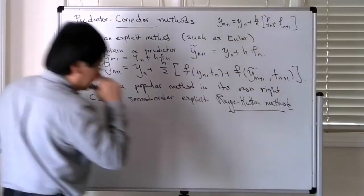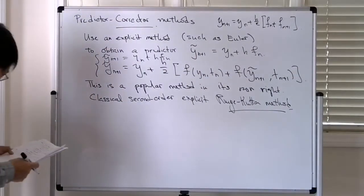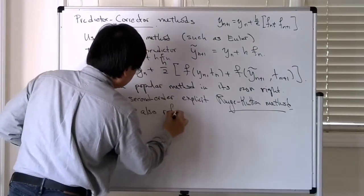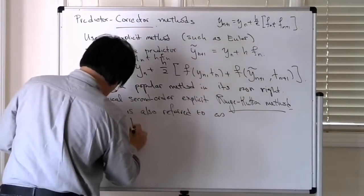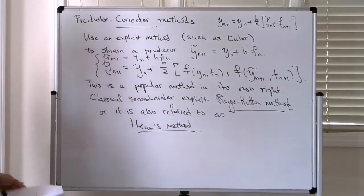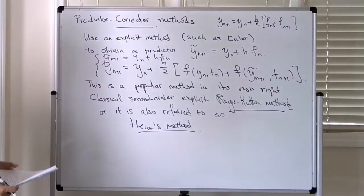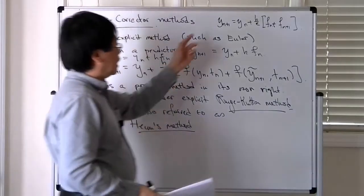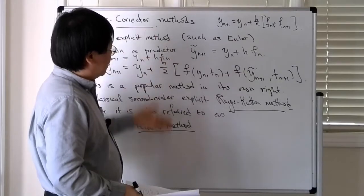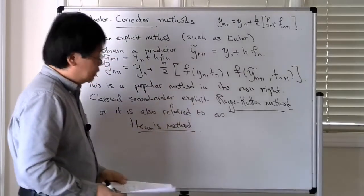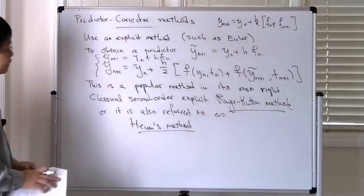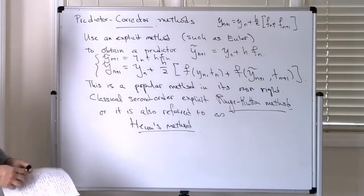We'll study Runge-Kutta methods more as we go along. This method is also called Heun's method. These are methods which you can obtain by starting with quadrature rule approximations of the fundamental theorem of calculus and then tweaking them. At this point it's quite natural to start looking at numerical quadrature rules, so the next thing we'll look at is how to systematically derive them.